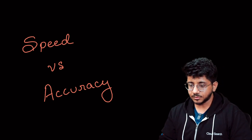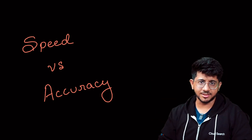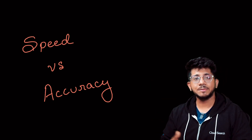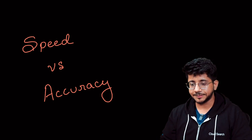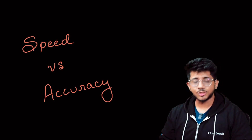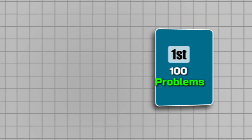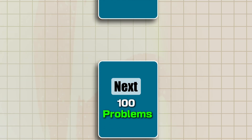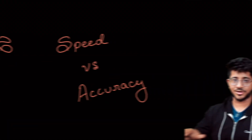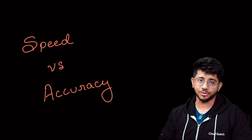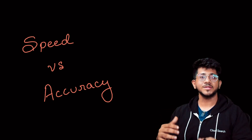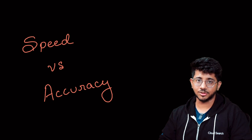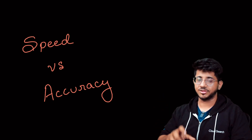Now, when to focus on which one — I think that's a very important question because many people practice in the wrong order. Let's talk about three stages: the first hundred problems, the next hundred problems, and the rest of the journey. So we're talking about your first 100 DSA/competitive programming problems, then the next hundred, and after that.